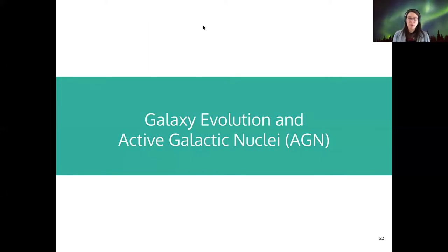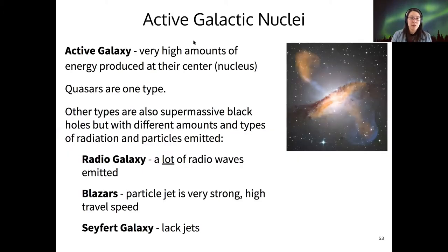I want to turn to the connection between galaxy evolution and active galactic nuclei, which we talked about last time - quasars. An active galaxy is any galaxy that produces a very high amount of energy at its center, from its nucleus. These are high luminosity galaxies, and quasars were one example that had thousands of times the luminosity of a normal galaxy.